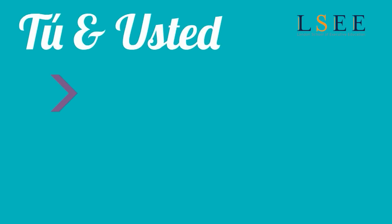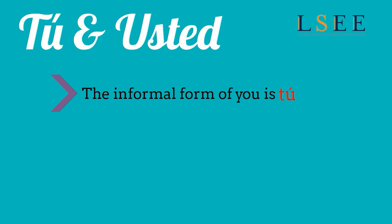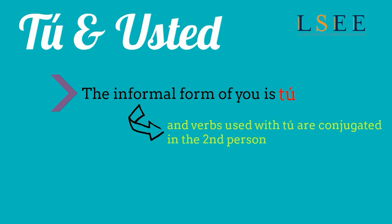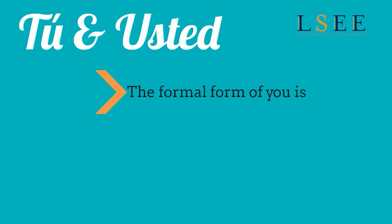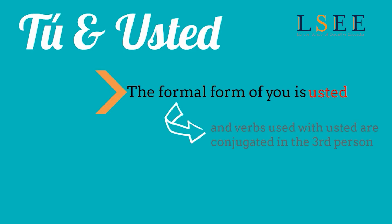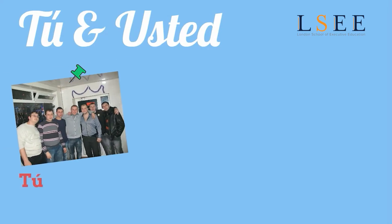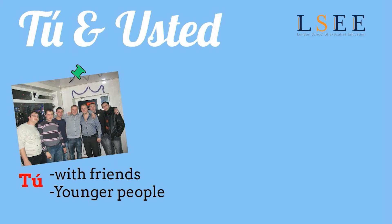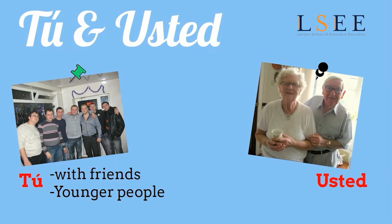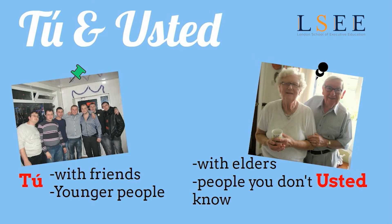Tú and usted. The informal form of 'you' is tú, and verbs used with tú are conjugated in the second person. The formal form of 'you' is usted, and verbs used with usted are conjugated in the third person. The familiar form is used with friends or with people who are younger than you. The formal form is used when you speak Spanish with elders or people you don't know.